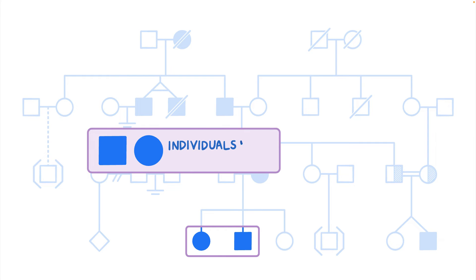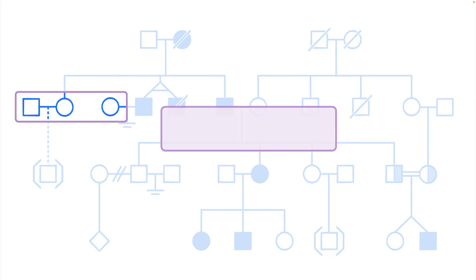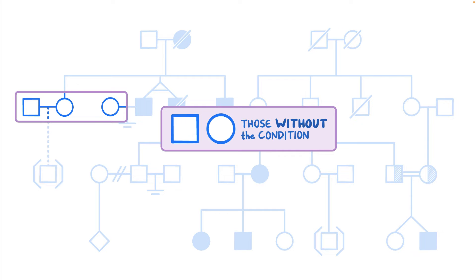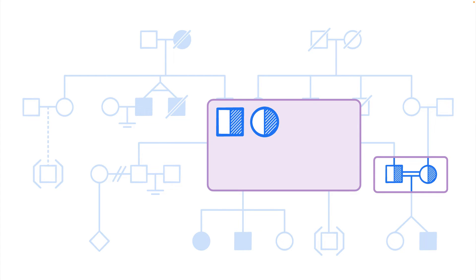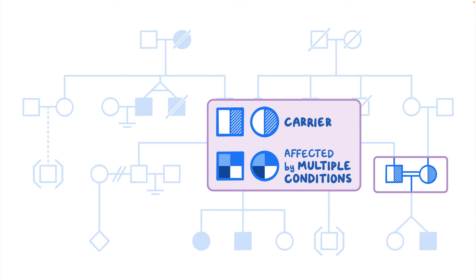Individuals with the condition of interest are represented by filled-in shapes, and those without the condition have empty shapes. Various fill patterns can be used to indicate carrier status and other clinical findings and should be defined in the legend. Shapes with a diagonal line through them represent family members who are deceased.